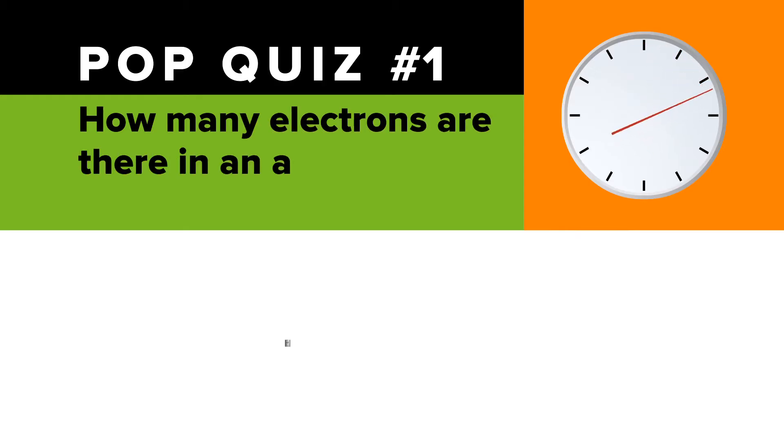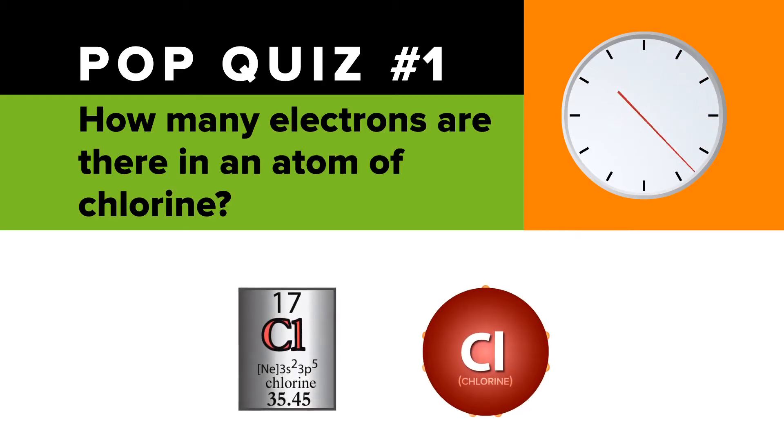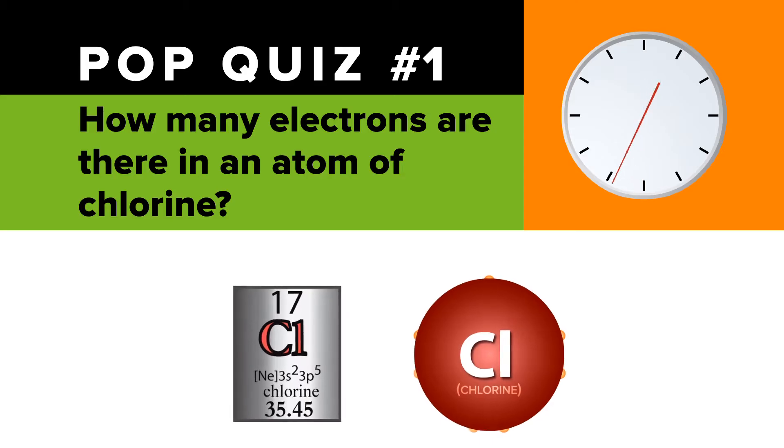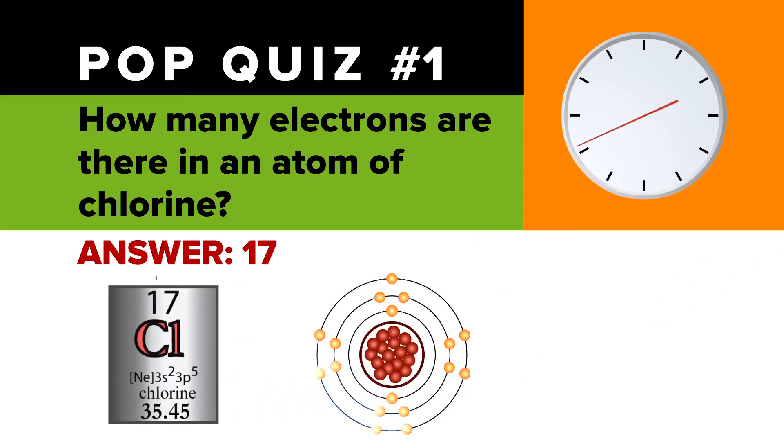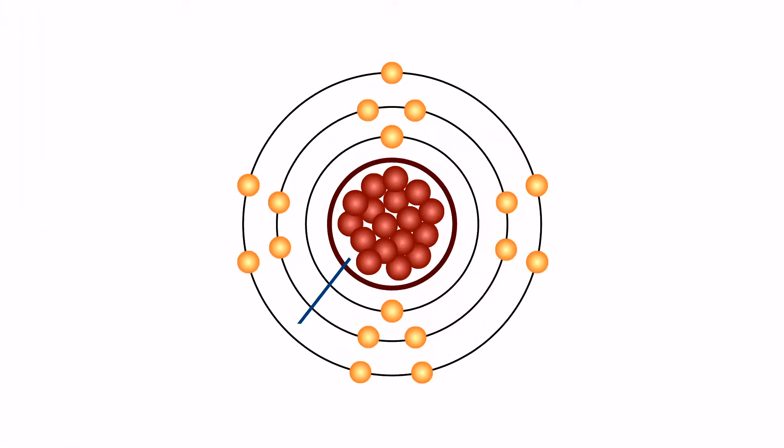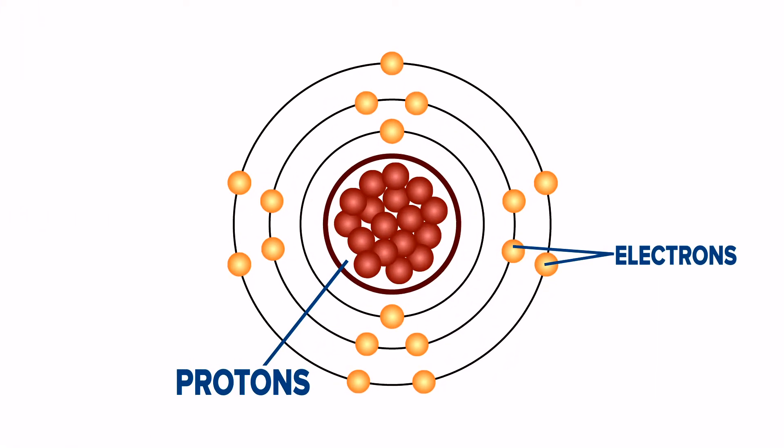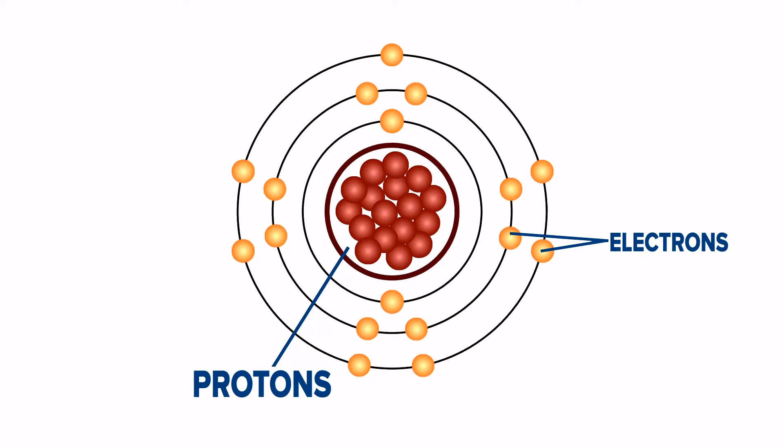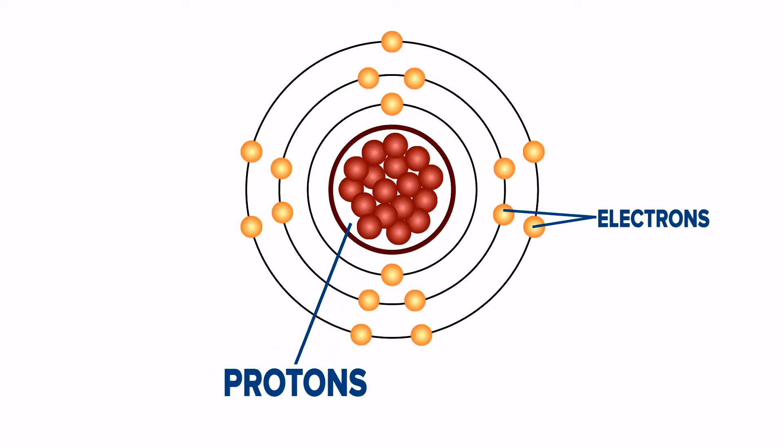How many electrons are there in an atom of chlorine, abbreviated Cl? Answer, 17, same as the number of protons. Now, while the number of protons and electrons in each atom is the same, protons and electrons are very different, with different electric charges.